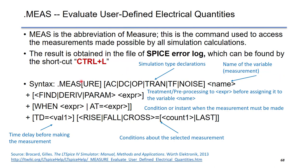The SPICE syntax is as follows: .meas followed by the simulation type declarations, and followed by the name of variable, which is the name of your measurement.